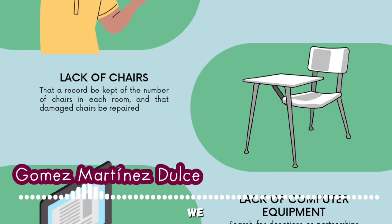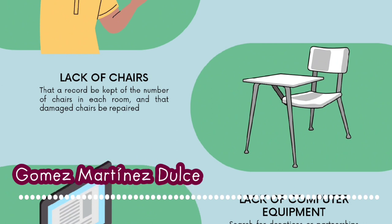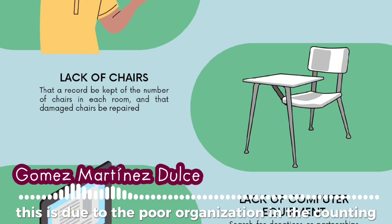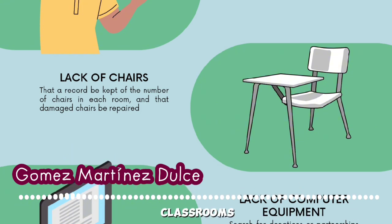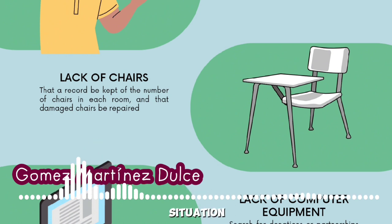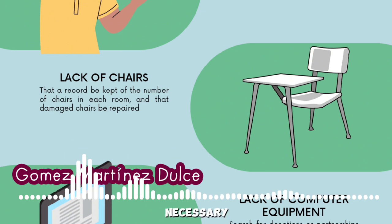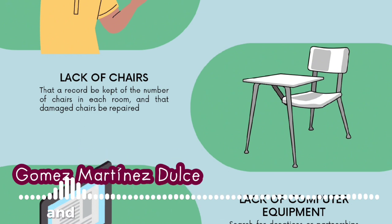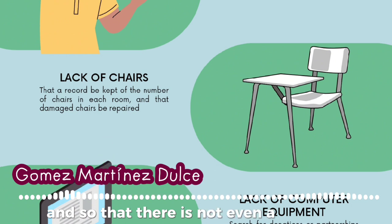At school, we see a lot of the problem of the lack of chairs in some classrooms. This is due to poor organization in the counting of students per classroom, since in some there are missing seats and in others there are plenty, having to go to other classrooms to see if they have a bench to spare. Our proposed solution is to have the administration perform a bench count and a count of students per classroom to ensure the necessary number of seats and so that there is no shortage.